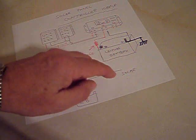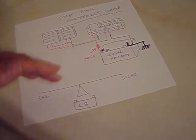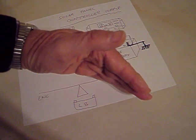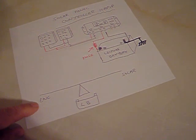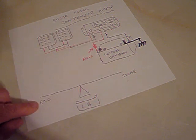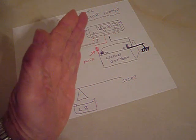So if the solar is giving a really good output compared to the engine running, the seesaw will tip that way and it will charge the leisure battery. Vice versa, if there's not much sun out, the engine is giving more power out for charging, it will tip the other way.